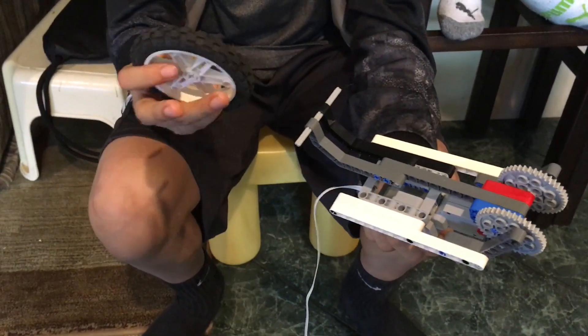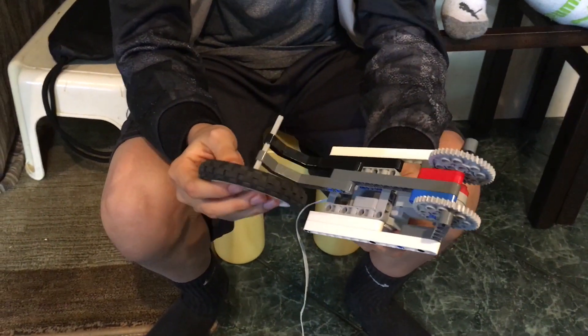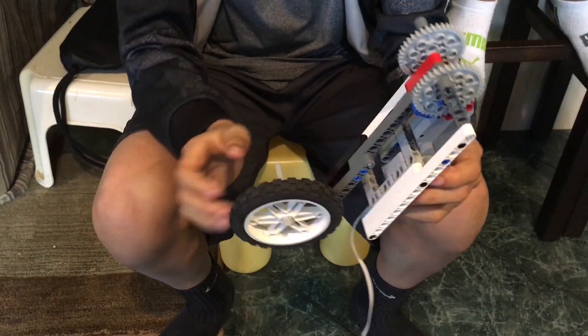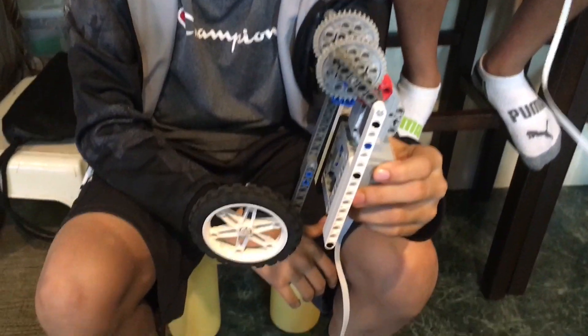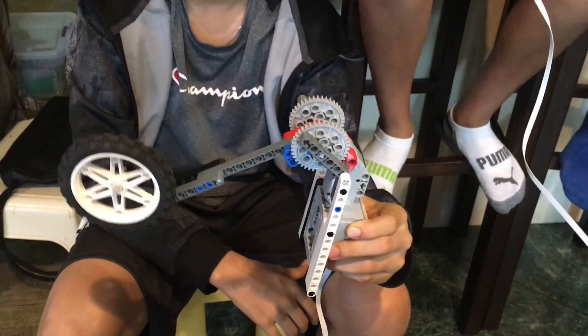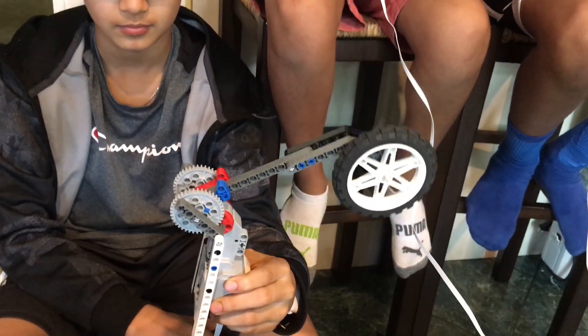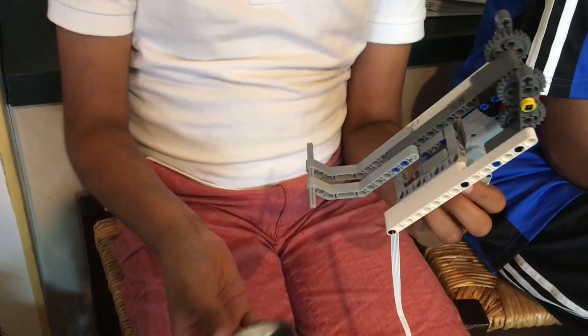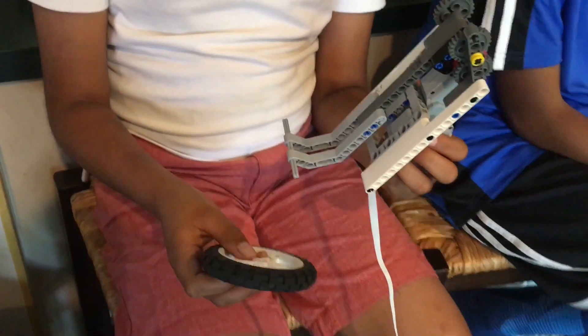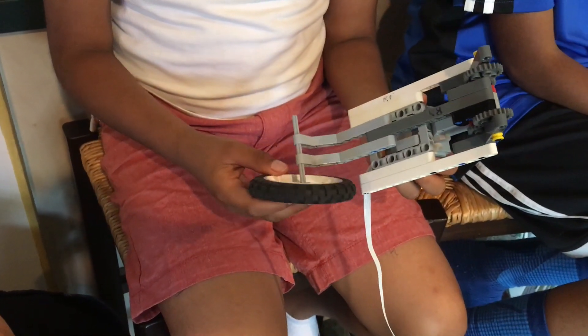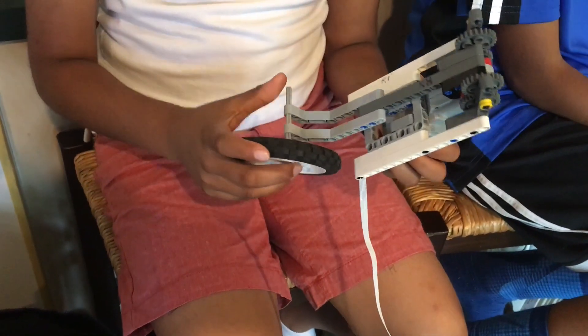Now I'm attaching this weight to the slowest arm. Let's see what happens. Now I'm going to attach this weight to the arm with the gear ratio of one to one. Let's see what happens.